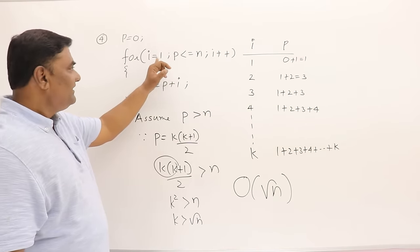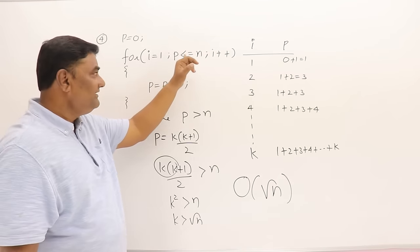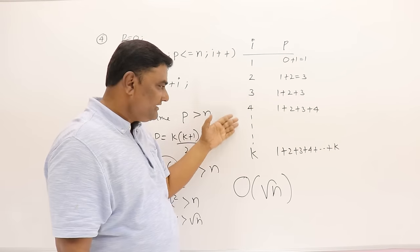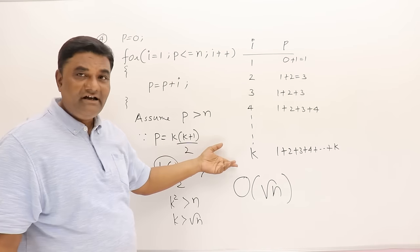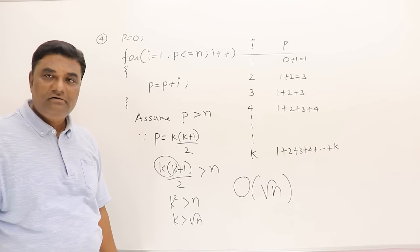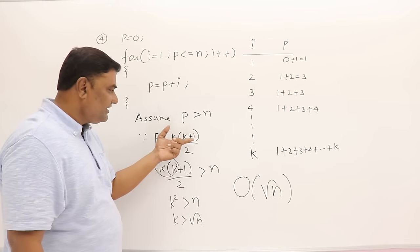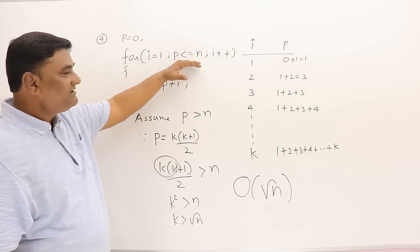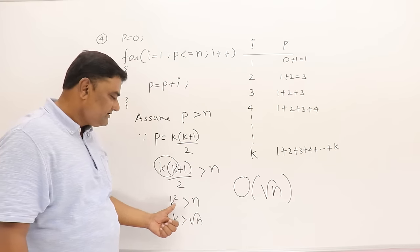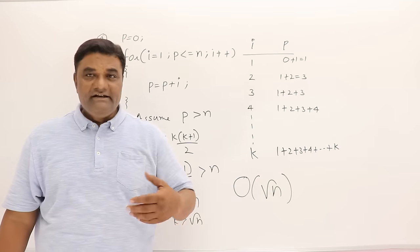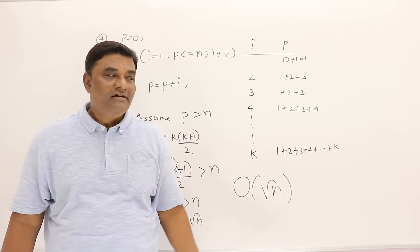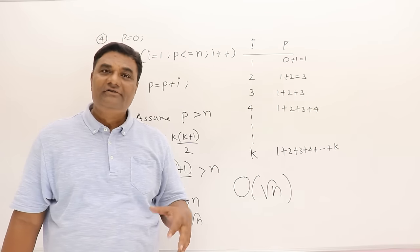To summarize: i starts at 1, p starts at 0, and the condition is p ≤ n — not i ≤ n. Every iteration adds i to p, so we don't know how many times it repeats; let's call it k. Then p = k(k+1)/2, and the loop stops when p > n, meaning k(k+1)/2 > n, so k² > n, giving k = √n. Therefore the time complexity is O(√n). In the next video, more examples with tracing will be shown.